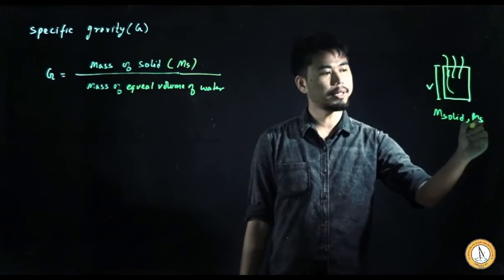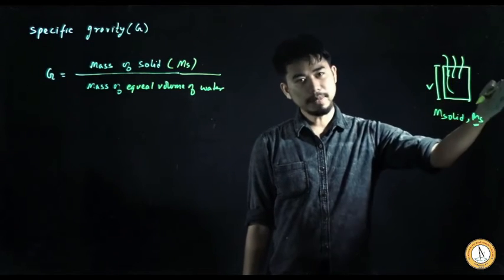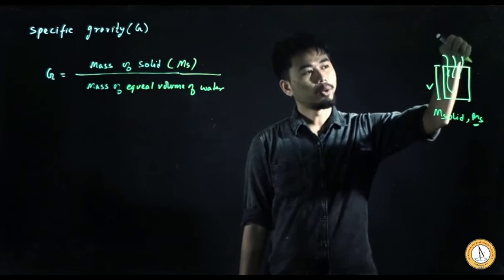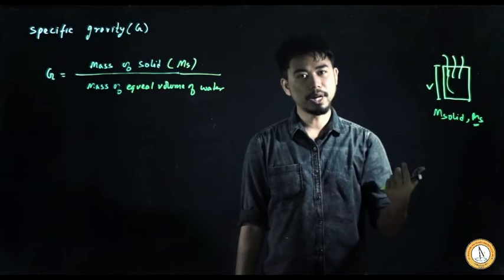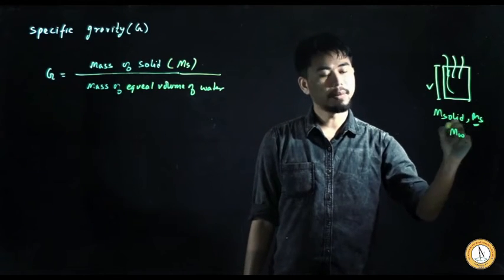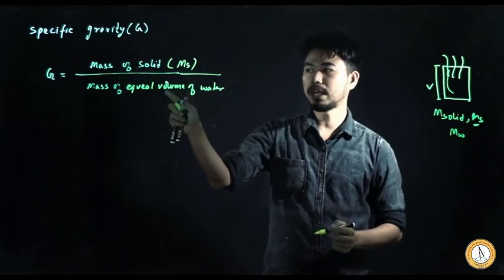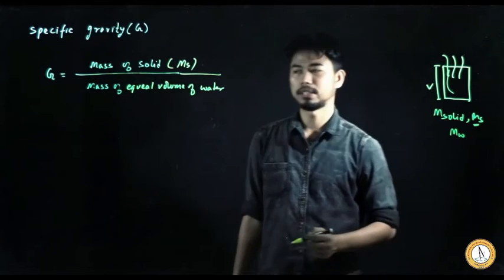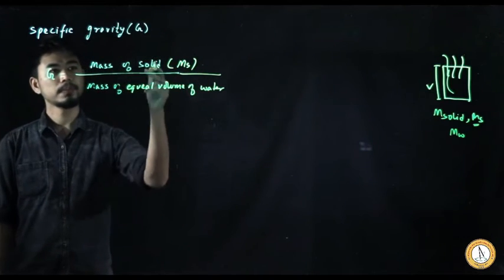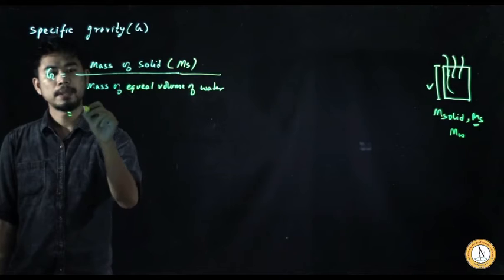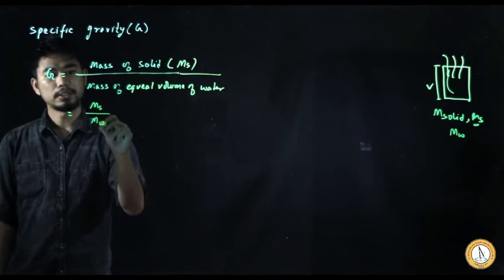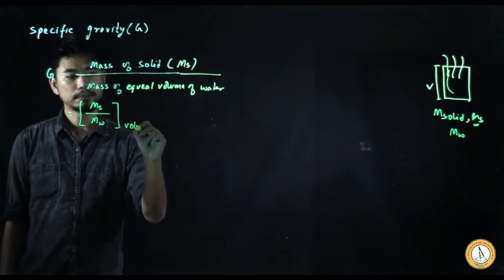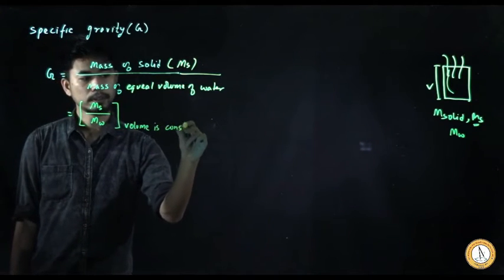When that container filled with solid has a mass Ms, now if I empty the solid and put water in place of it in the same container, that water will have some mass. The ratio of the mass of the solid to the mass of the water, keeping the volume constant, is the specific gravity — Ms divided by Mw, with volume kept the same.